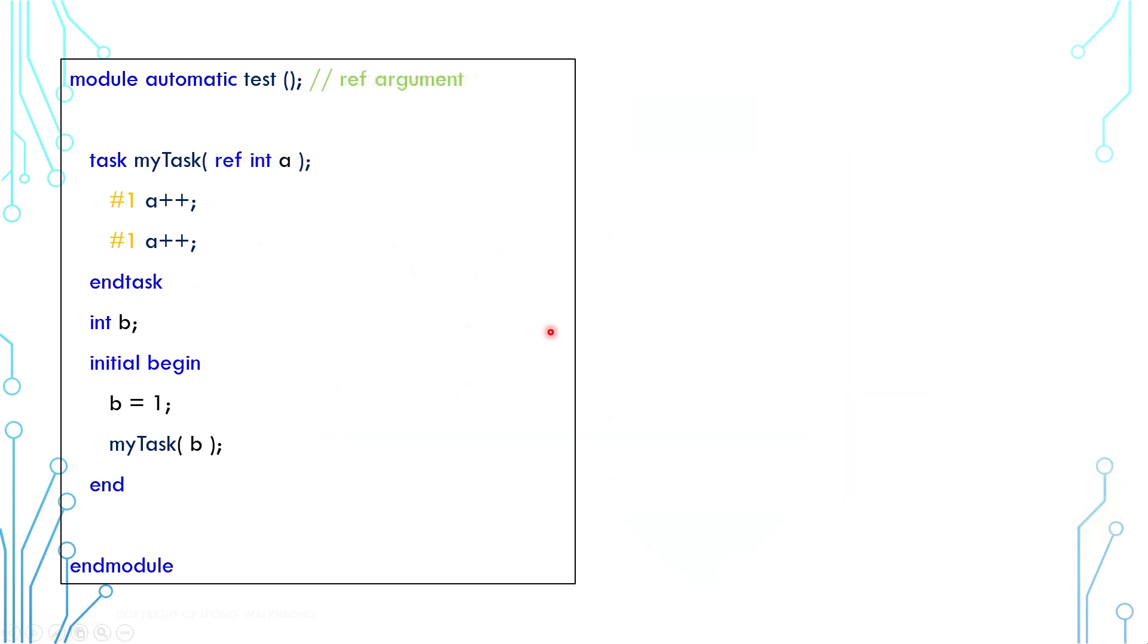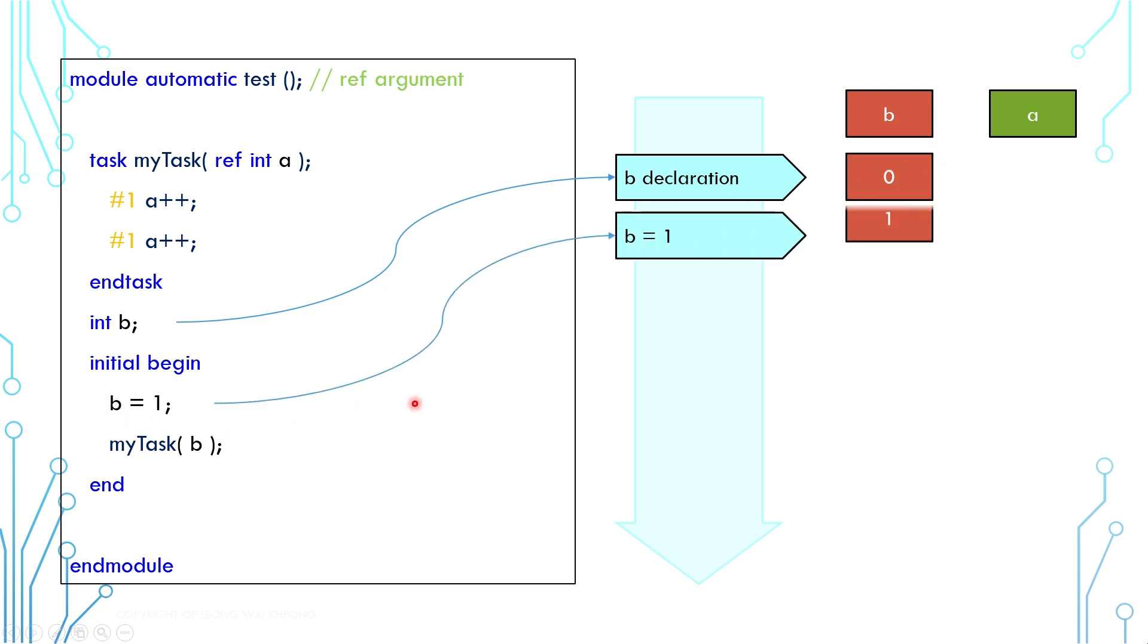The previous three examples are passing argument by value. Now let's take a look at passing argument by reference. The keyword is ref. If we go down the code step by step, B is created and defaulted to 0. B is assigned to 1.